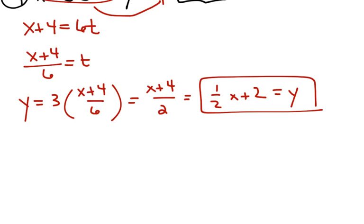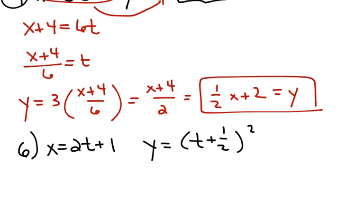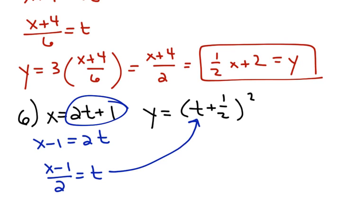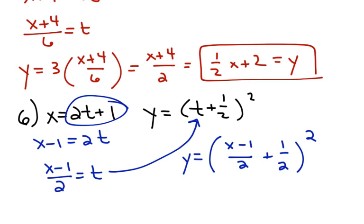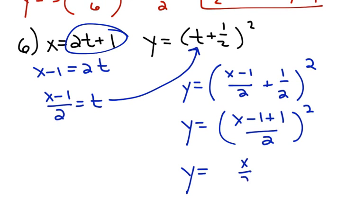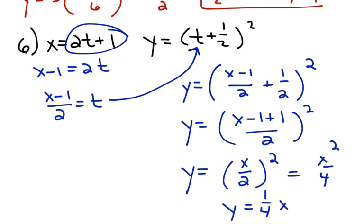For number 6, x equals 2t+1 and y equals (t + 1/2)². We can tell quickly that this will be quadratic. Solving the first equation for t: x−1 equals 2t, so t equals (x−1)/2. Substituting into the second equation: y equals ((x−1)/2 + 1/2)². Those fractions have a common denominator, so we get (x/2)², which is x²/4. So this is just the quadratic equation y equals (1/4)x².